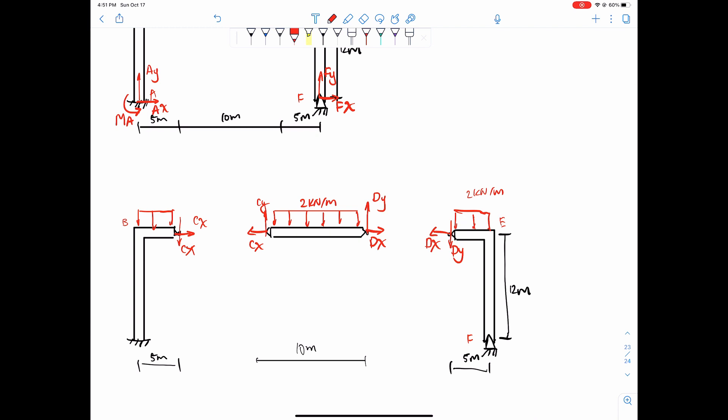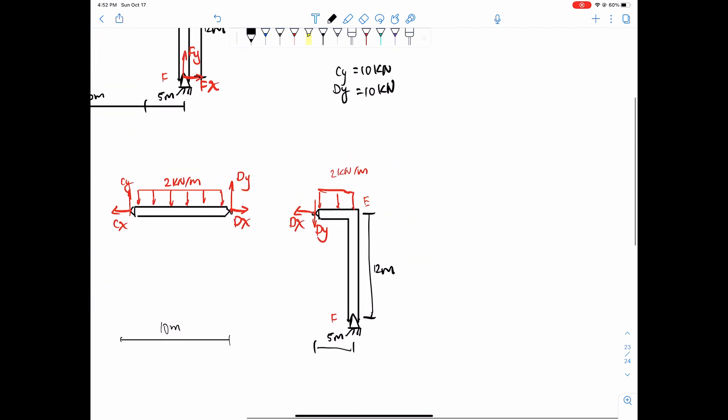We can solve cy and dy right away. It's very simple because it's a segment of beam that is just under symmetrical loading. So it would just be this 2 kilonewtons times this distance, 10 meters, 20 kilonewtons, and then divide by 2 because it's equal on both sides. So it's just 10 kilonewtons for each of them.